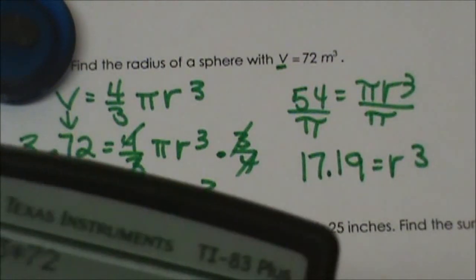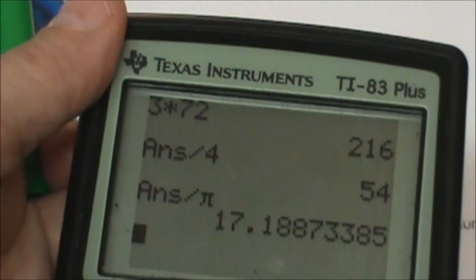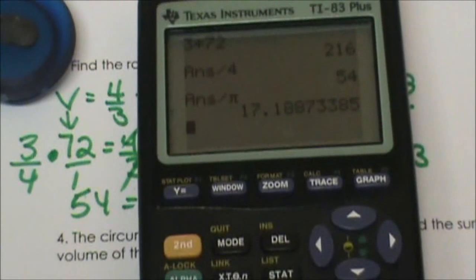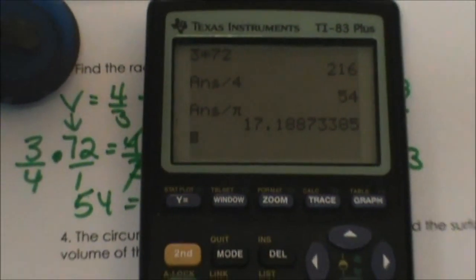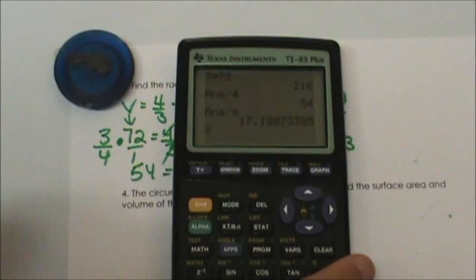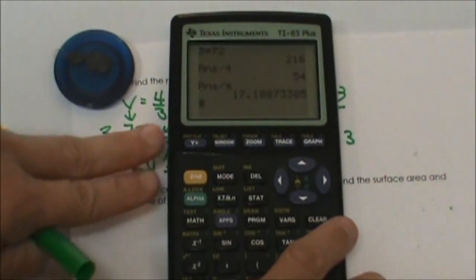Now how do you undo a cube? You have to take a cube root so let me get this big enough so you can see. What we are going to have to do now is we are going to have to take the cube root of that 17.19 so I am going to show you what to do.